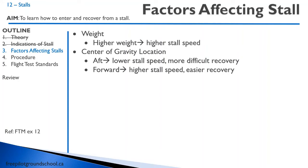Secondly, center of gravity location affects the stall. With an aft center of gravity, you're going to have a lower stall speed but a more difficult recovery. The reason is that with an aft CG, you're going to have less downward force on the horizontal stabilizer, and because you have less downward force, you require less angle of attack for the same weight. Conversely, with a forward center of gravity, you're going to have a higher stall speed but an easier recovery. This is something flight test examiners may ask you, so if you're still confused, review that ground school lesson or discuss it with your flight instructor.